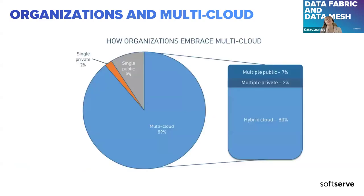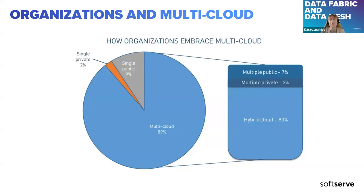Here is a quick chart that shows us how organizations embrace multi-cloud. We can see that the majority of companies — 89%, based on data from last year — actually utilize multi-cloud. There are very isolated cases of a single public or single private infrastructure setup, which simply confirms that all the challenges I described are very valid.